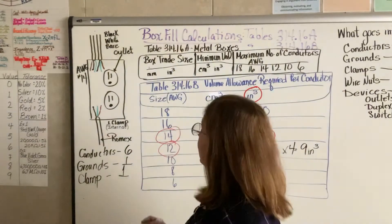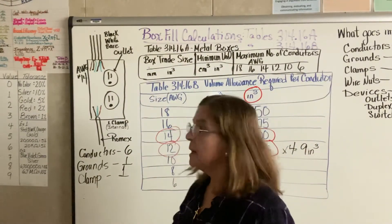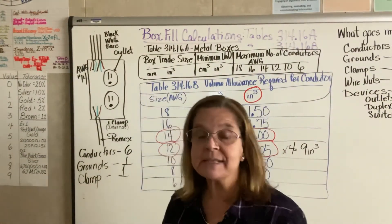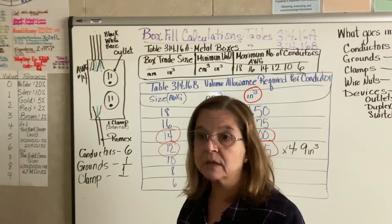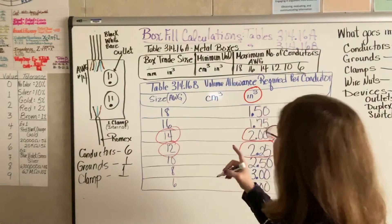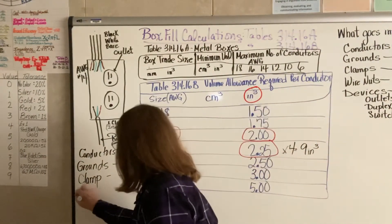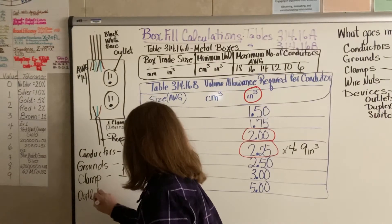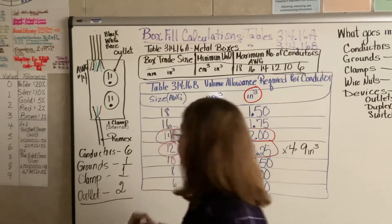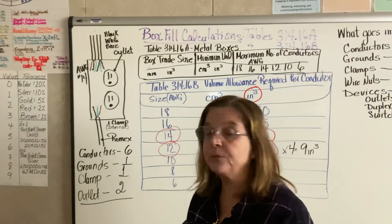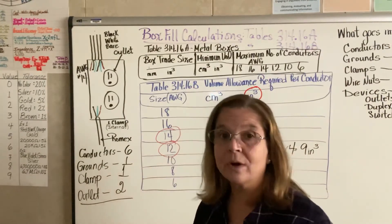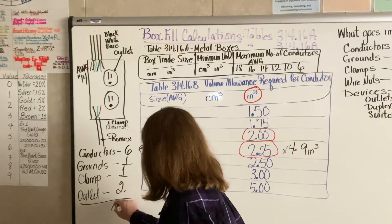And then I probably have a few wire nuts. We don't count those. But I have the actual device itself, the outlet. All devices count twice and you use whatever conductor wire size you have. So in this case we're using size 14. So how many items or pieces do I have to actually account for inside this box? 6, 7, 8, and 2 more is 10. So I have 10 all together.